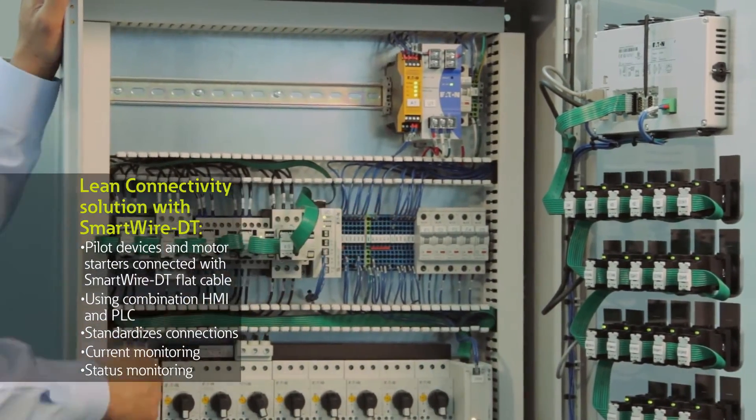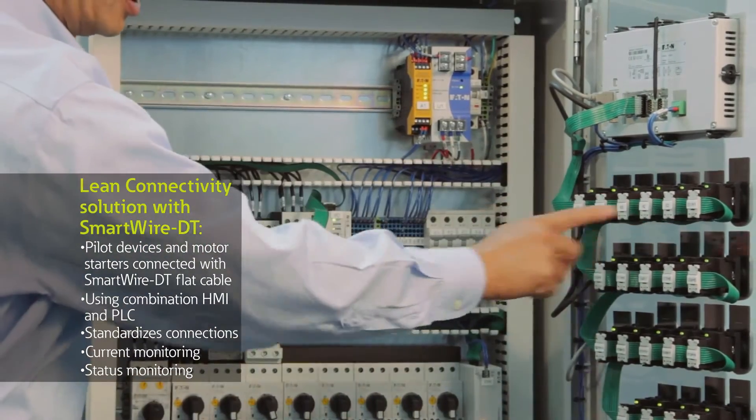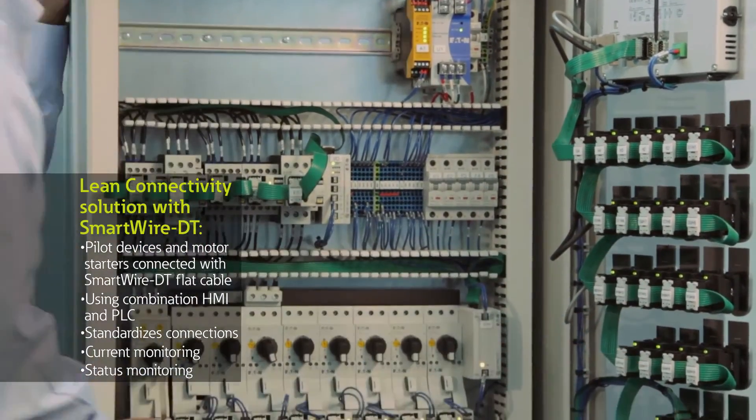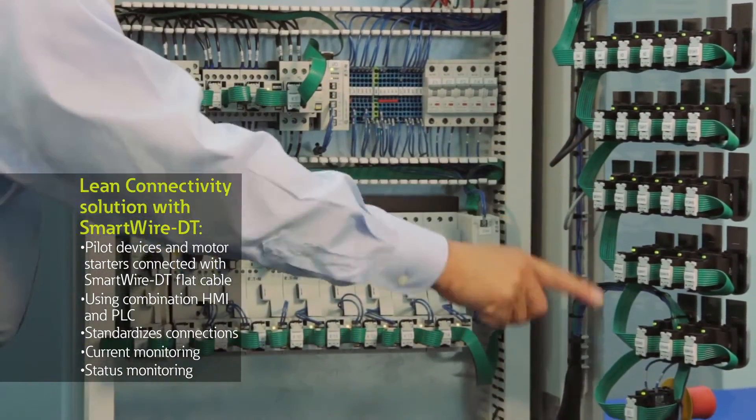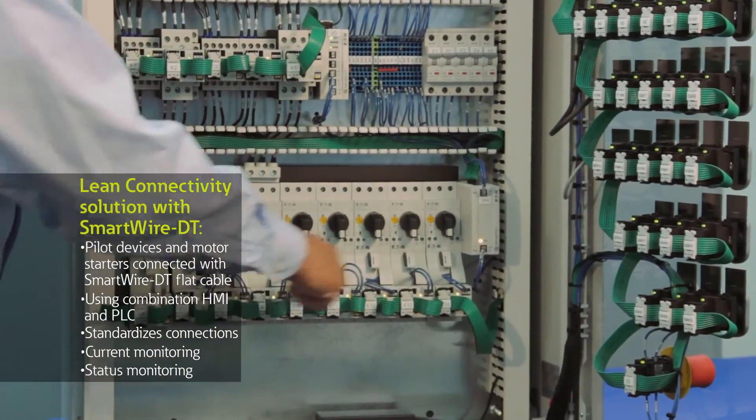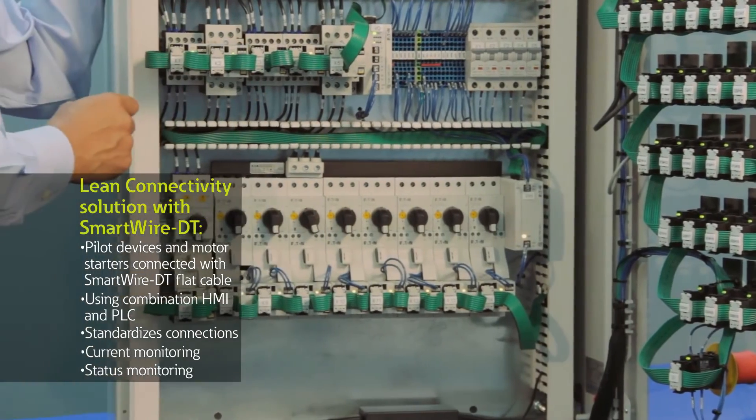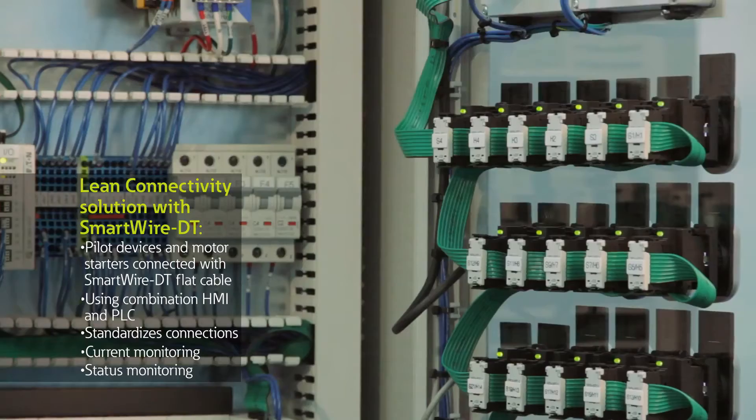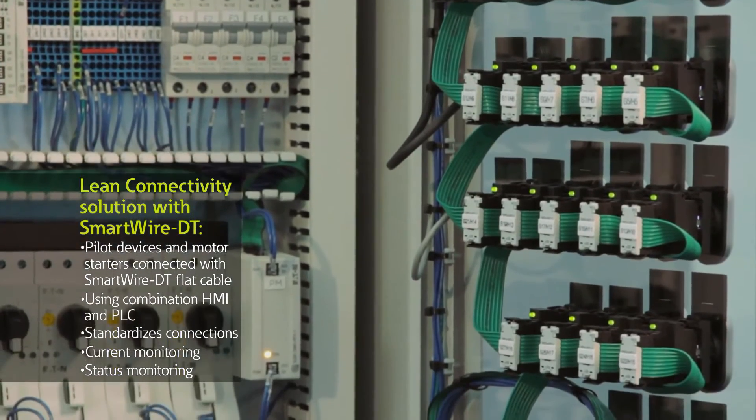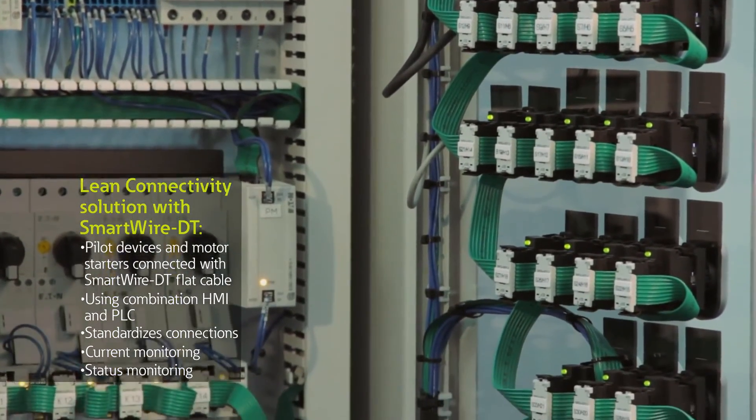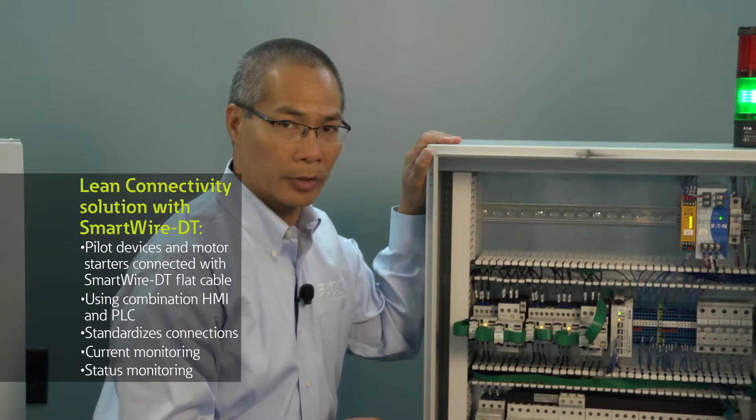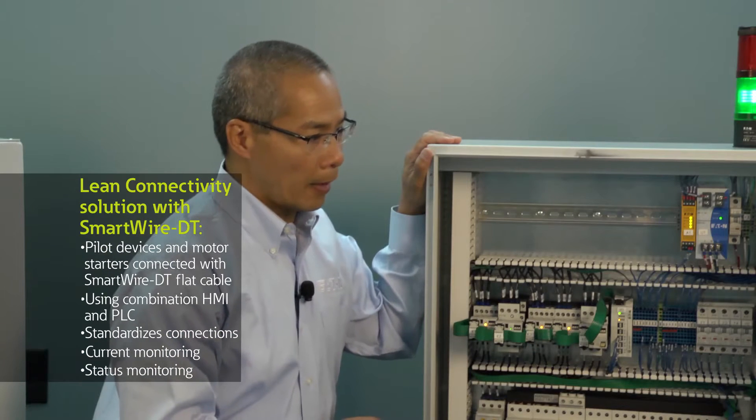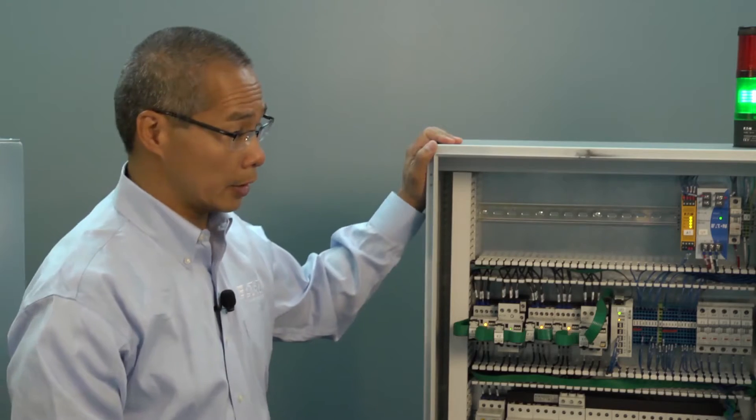What you'll notice here is the flat cable simply connects all my devices serially in one line - all my push-button devices back to my contactor devices on this one flat cable. You'll notice there are some indicating lights that you see on each device. That's telling me the status of the actual module on SmartWire DT.